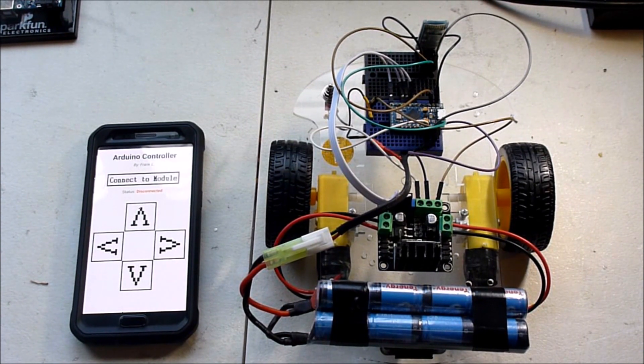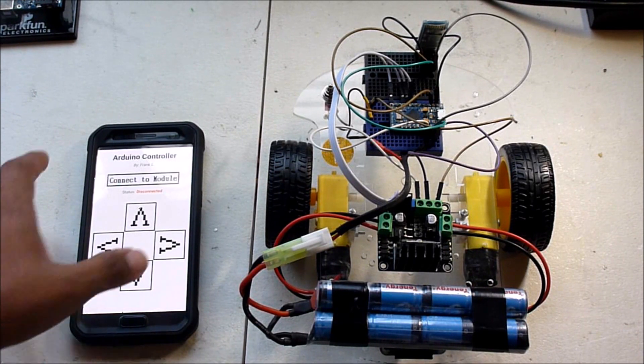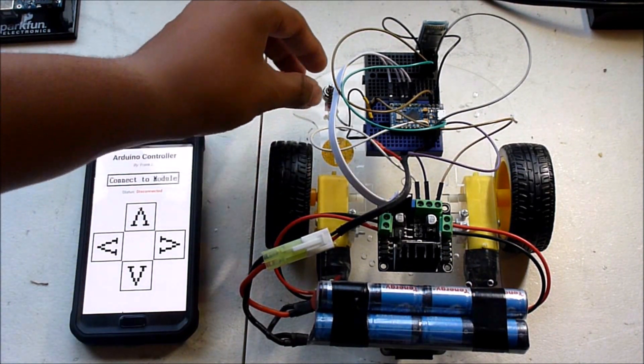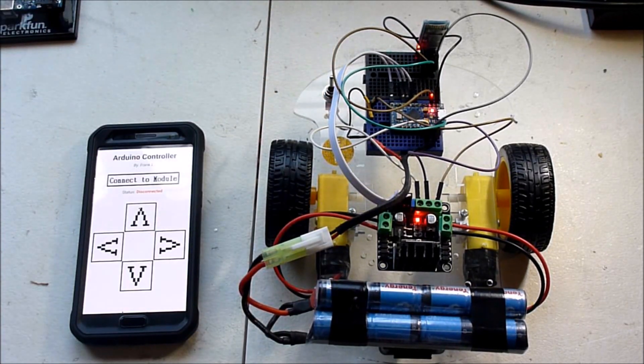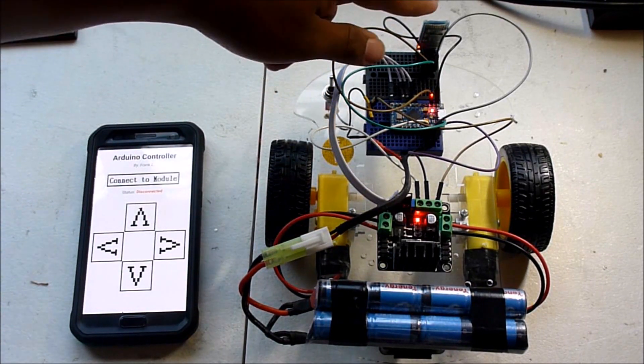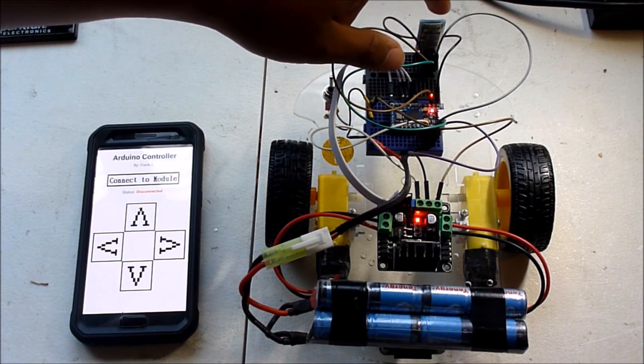This is all powered by one 9.6 volt battery. When I flip this toggle switch, it will give power to all three of the components. As you can see, the Bluetooth device is flashing.